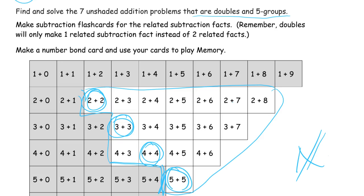And now the ones that have five groups — those are the ones with fives in them. So we have five, three plus five, and four plus five.